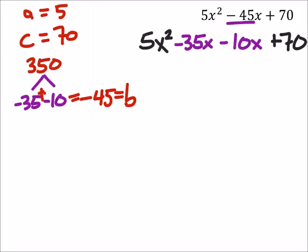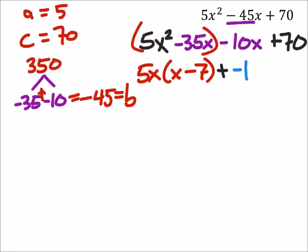And now, factoring by grouping, I can factor out a 5x from these two terms. So 5x, then I've got an x minus 7, and then I'm going to add this to, on this one, I'm going to factor out negative 10, which gives me x minus 7.